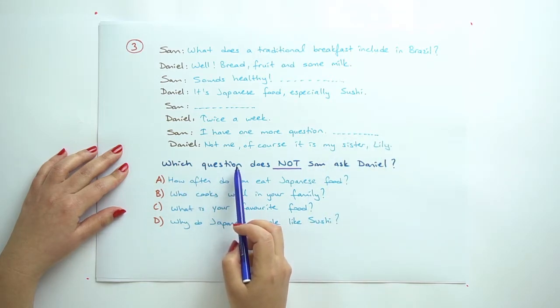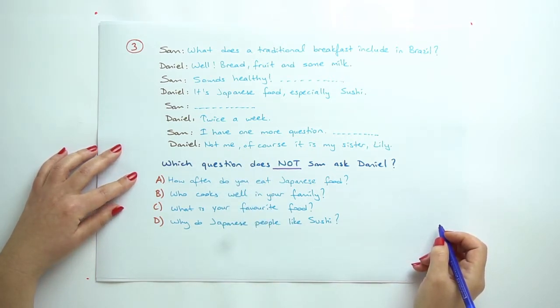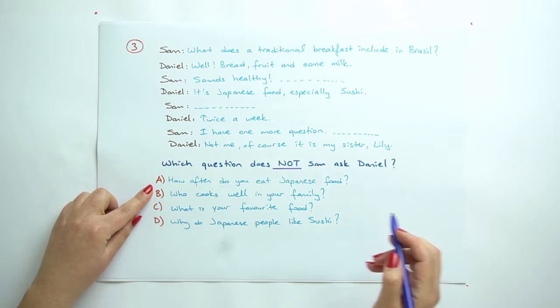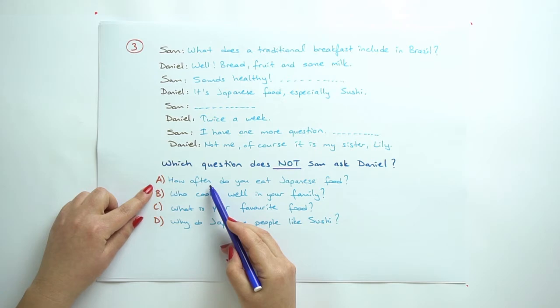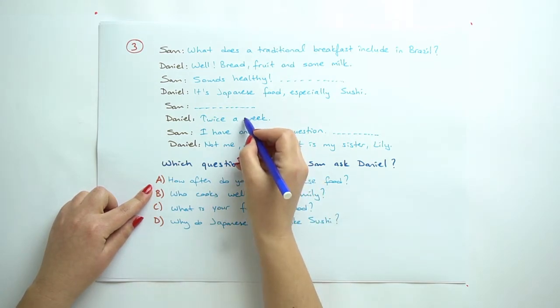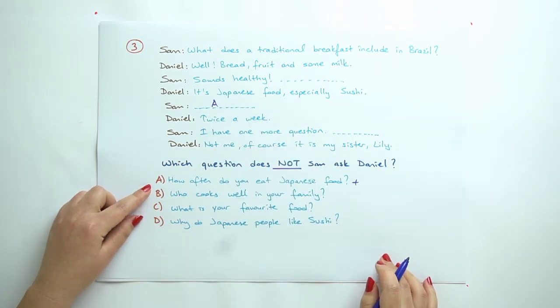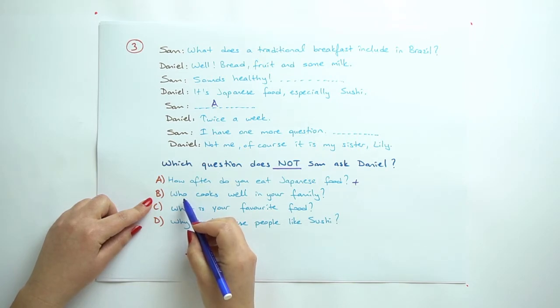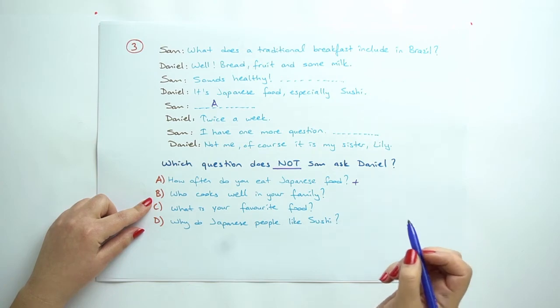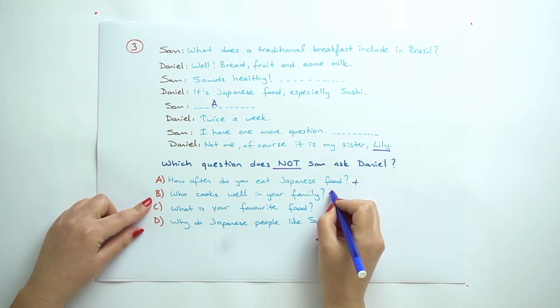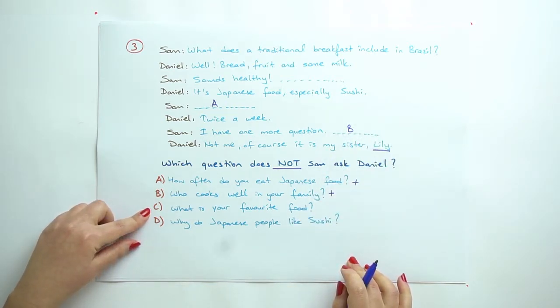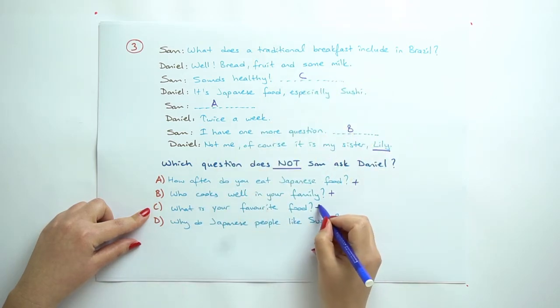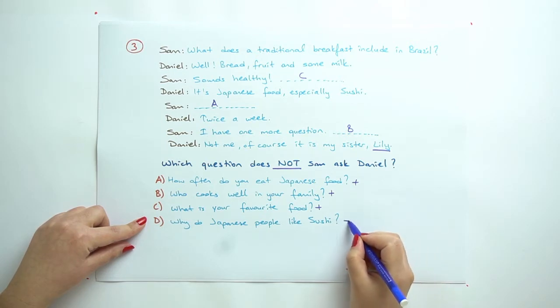Daniel: it is Japanese food, especially sushi. Sam says something, then Daniel: twice a week. And Sam: I have one more question. Daniel: not for me, of course. It is my sister Lily. Option A: how often do you eat Japanese food? Here we have often, we need to see the frequency adverbs. We have here, so we can write this one: twice a week. B: who cooks well in your family? We need to see a name or a person. We have sister Lily, so we can say this one too. C: what is your favorite food? Favorite food: sushi. We can say this one too.